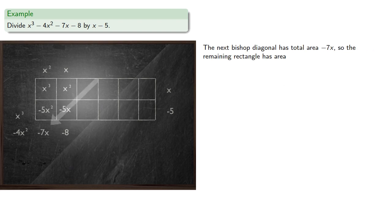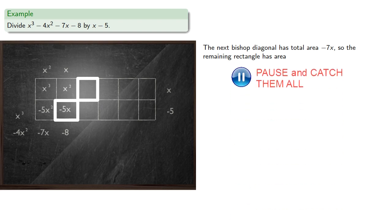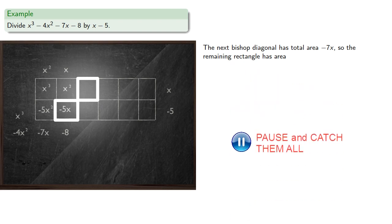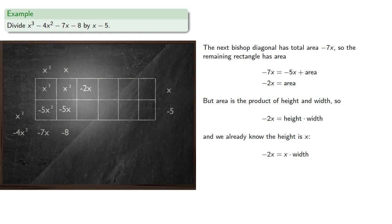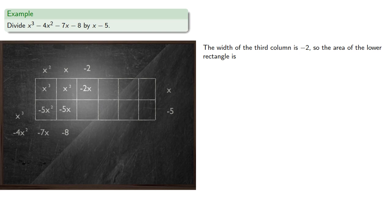The next bishop diagonal has total area negative 7x, but we already know the areas of some rectangles, so we only have one rectangle whose area we don't know. The area is x squared, and since area is the product of height and width and we already know the height is x, the width must be negative 2.